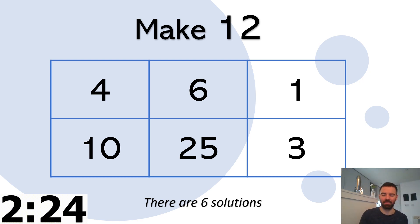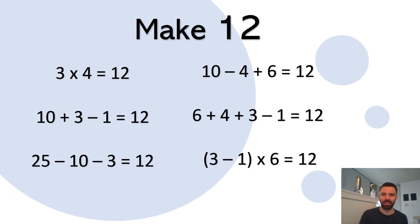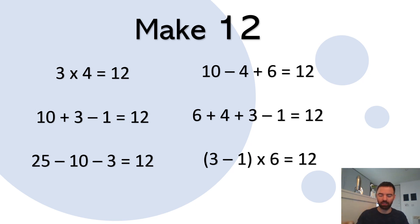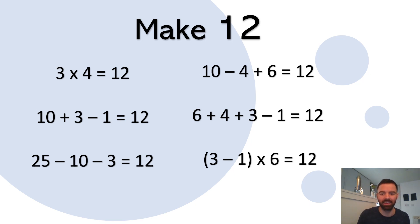I didn't manage them all — rubbish! What are the solutions? Ten take away four is six, then add the other six — that's 12. That was a good one. You might want to pause the video and check these. Three take away one is two, times six is 12 — that's a clever one!